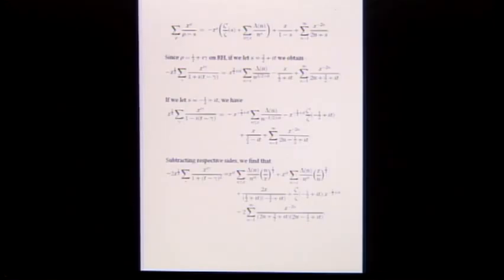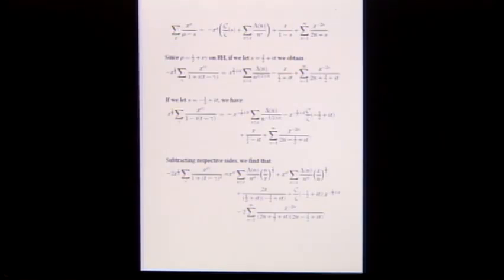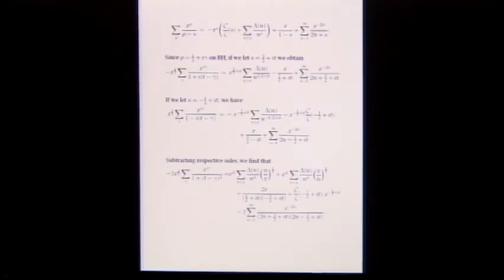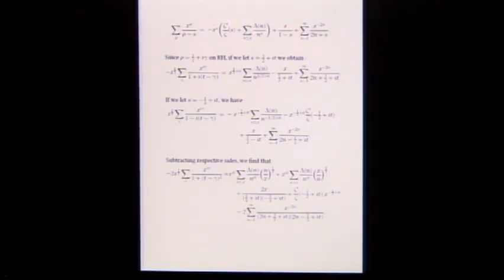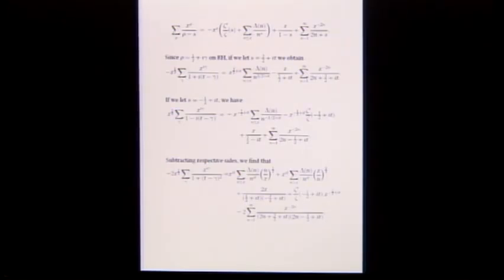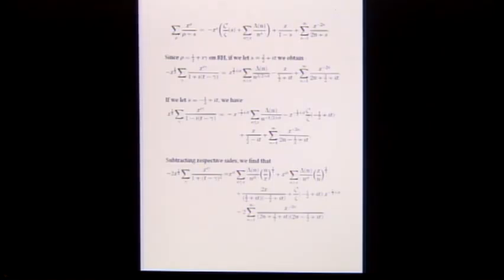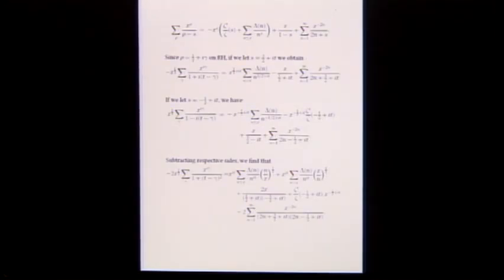Now go back and put in s equals negative one-half plus i t. The x to the (one-half plus i gamma) factor gives x to the half times x to the i gamma. The rho minus s gives this expression. This time I can't put in the Dirichlet series for zeta prime over zeta at negative one-half plus i t, since we're outside the half-plane of representation, so I just separate it out.